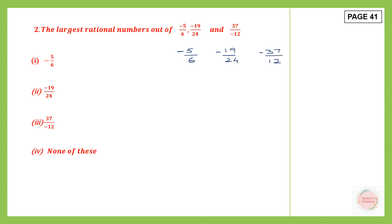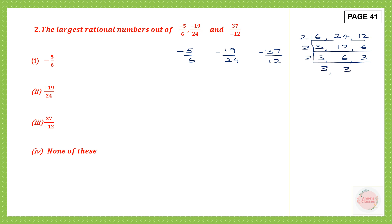Now we have to find the LCM of the denominators. We take 6, 24, and 12. Dividing by 2: 2 threes are 6, 2 twelves are 24, 2 sixes are 12. Continue with 2, bring down the 3, 2 sixes are 12, 2 threes are 6. Continue again with 2, bring down the 3, 2 threes are 6, bring down the 3. Continue with 3, so this will be 3 ones and 1. The LCM will be 2 into 2 into 2 into 3: 2 twos are 4, 4 twos are 8, 8 threes are 24. The LCM is 24.